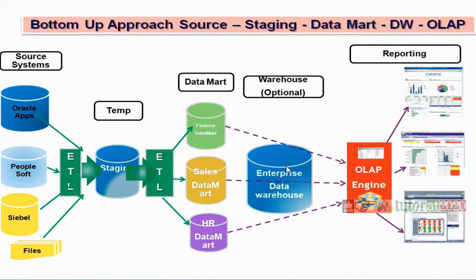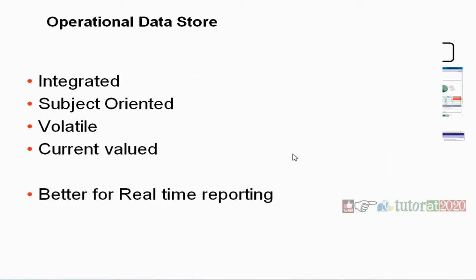But nowadays, we have everything available — even big databases, big data, high-end, in-memory, NoSQL, and columnar databases are available. Whatever extent of data you want to store and process, we are ready. That's why the best architecture nowadays is the top-down approach. So this is all the architecture of data warehousing and the theory part of data warehousing.